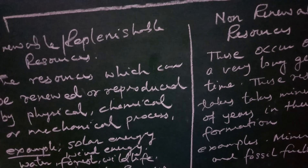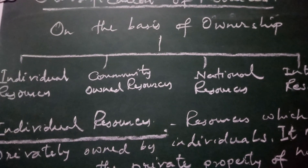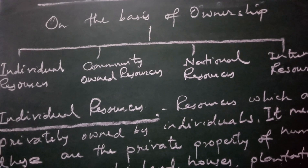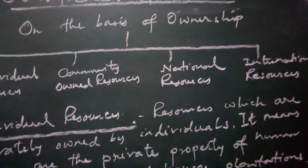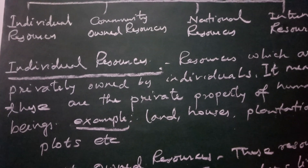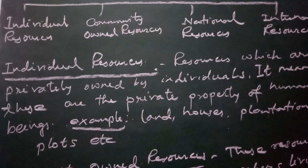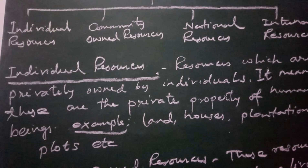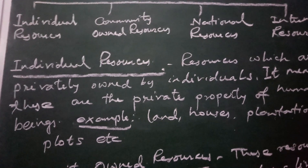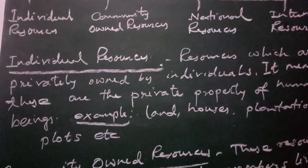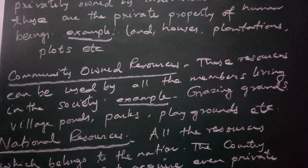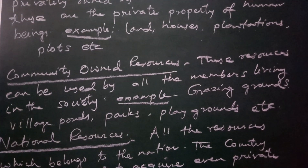The next classification is on the basis of ownership. Resources can be classified as individual resources, community-owned resources, national resources and international resources. Individual resources are those which are privately owned by individuals — they are the private property of human beings. Examples include our land, houses, plantations, and plots, because these belong to human beings who have the right to use them in their own ways.